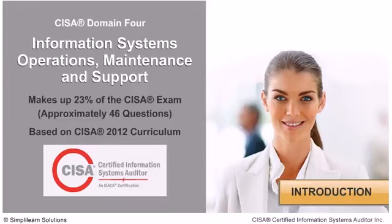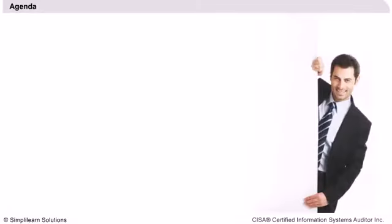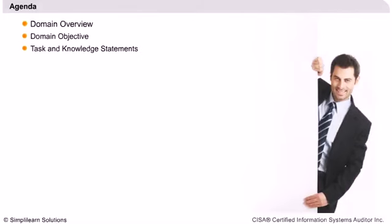We start off by going through the agenda of what we expect to cover in domain 4. As indicated in the slides, we will start off with an overview of domain 4, after which we will get to understand the domain 4 objective. This will take us to the task and knowledge statements, which highlight key aspects to be covered in domain 4. This will be followed by a look at a list of additional study resources that are quite expansive in covering the content of domain 4. The content has been broken down according to the ISACA knowledge statements, for easy referencing and review of the key concepts in domain 4.